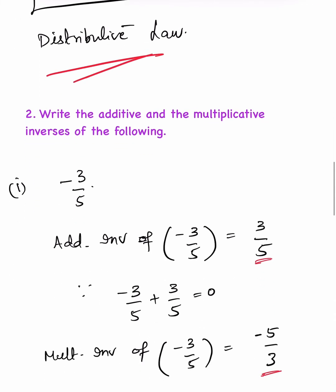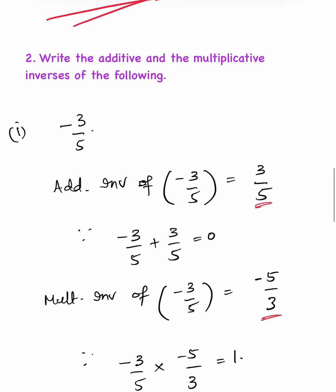Write the additive and multiplicative inverses of the following. The additive inverse: if we add a number and its additive inverse, we should get 0. The multiplicative inverse: if we multiply a number and its multiplicative inverse, we should get 1.